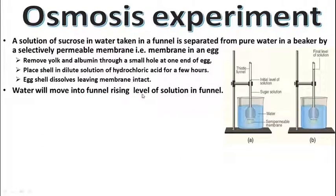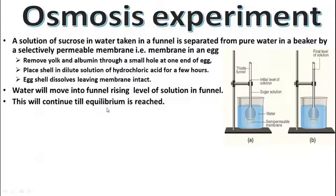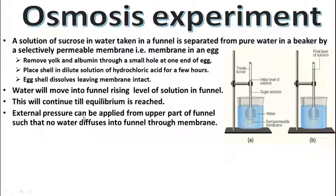Water will move into the funnel, rising the level. जो pure water है, वहाँ से water concentrated solution में enter करना start कर देगा, जिससे funnel के अंदर जो initial level था वो rise होता है — जब तक water potential दोनों sides में, funnel के अंदर और beaker में, बराबर नहीं हो जाता। External pressure can be applied from the upper part of the funnel such that no water diffuses into the funnel through the membrane — बाहर से extra pressure लगाने से जो level है वो initial level पर ही रह सकता है।